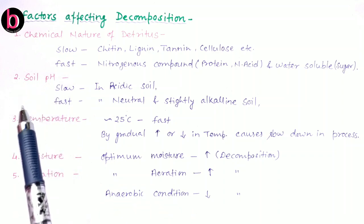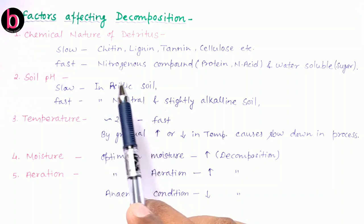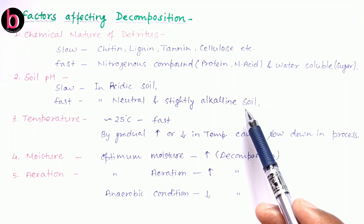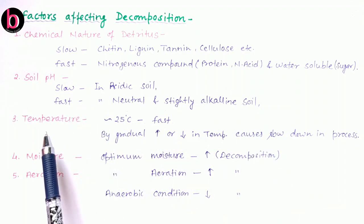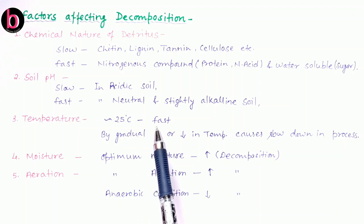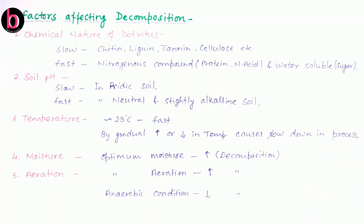The second factor is the pH of soil. If soil is highly acidic, it supports less decomposition, whereas neutral and slightly alkaline soil increases the rate of decomposition. The third factor is temperature. Around 25°C is very helpful for decomposition, and gradually moving above or below this range causes a gradual slowdown in decomposition.